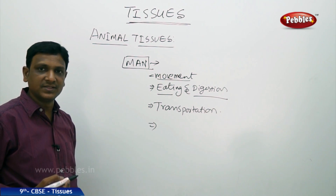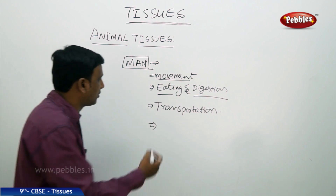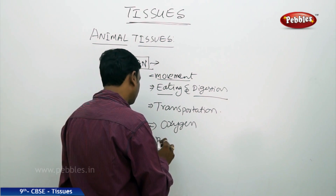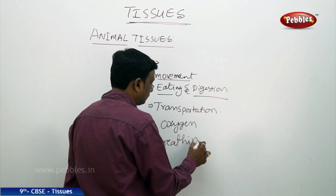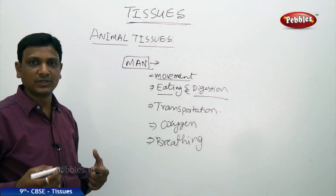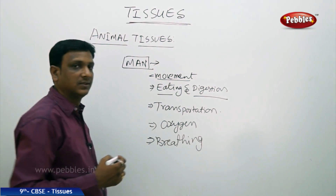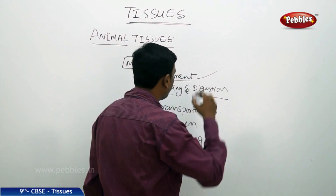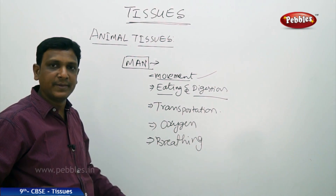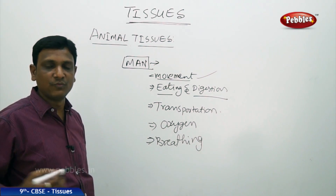Inside the cells, activities take place: food is utilized, energy is produced, and waste is produced. The waste has to be excreted out, and for energy production, oxygen is required. Oxygen is obtained by breathing. For breathing, you have to move your lungs and ribs and give movements in your diaphragm. So you need special tissues to achieve all this. Animals need special tissues to achieve movement — whether movement within the body, movement of body parts, or locomotion from one place to another to get food.